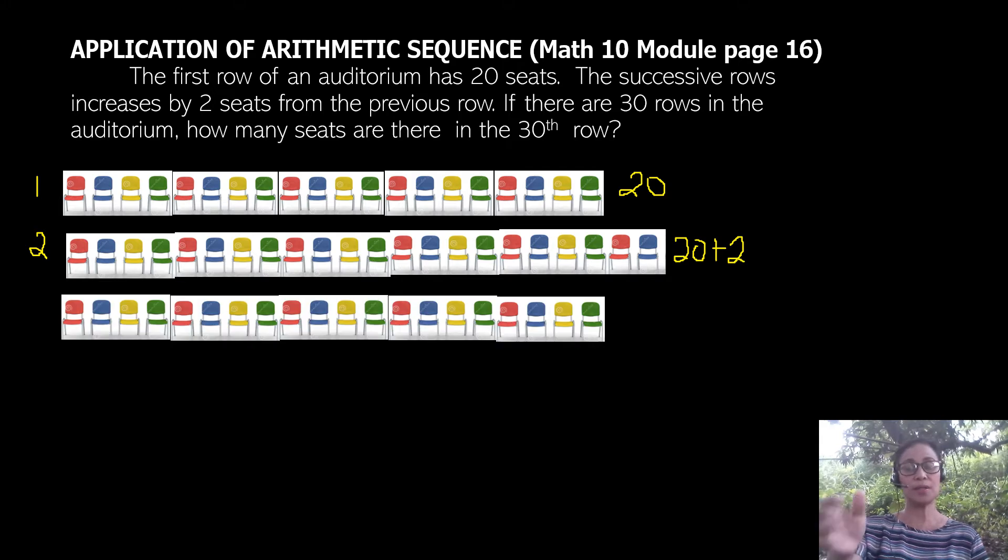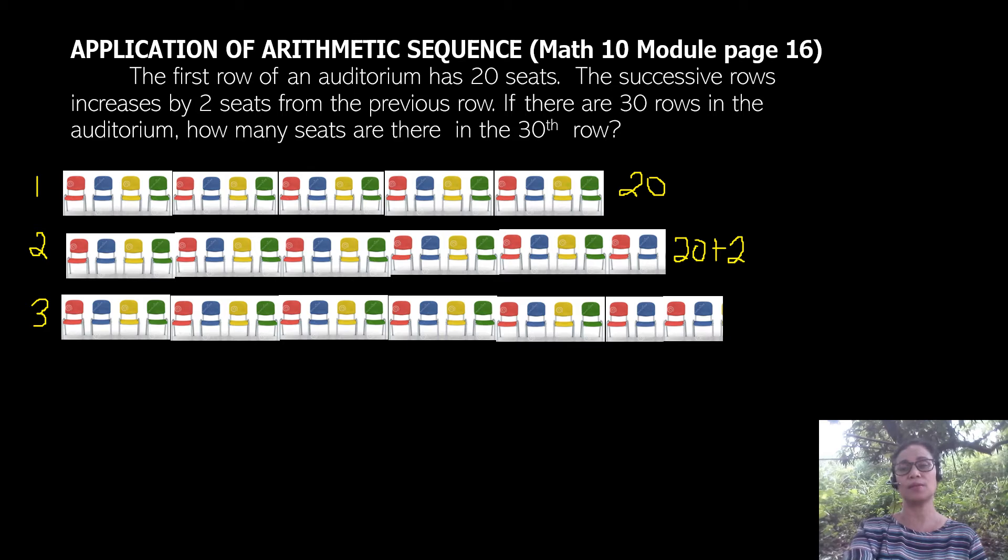The third row has to increase also by 2 seats compared to the second row. So our third row should have 20 plus 2 and another plus 2. So 20 plus 2, and then another 2 chairs.